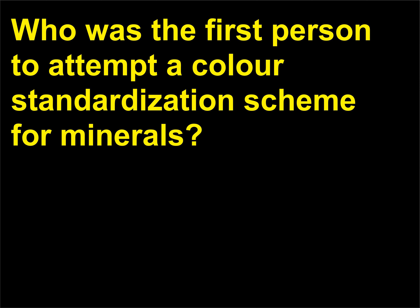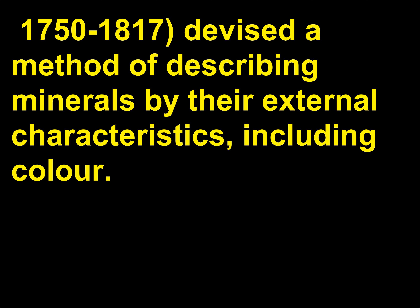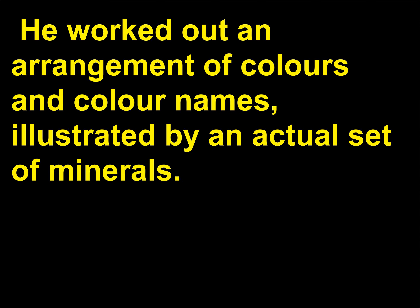Who was the first person to attempt a color standardization scheme for minerals? The German mineralogist Abraham Gottlieb Werner (c. 1750–1817) devised a method of describing minerals by their external characteristics, including color. He worked out an arrangement of colors and color names, illustrated by an actual set of minerals.